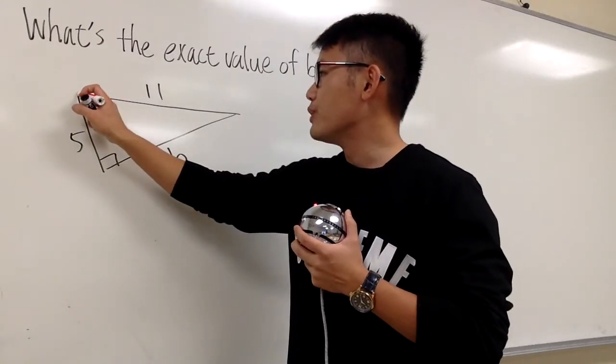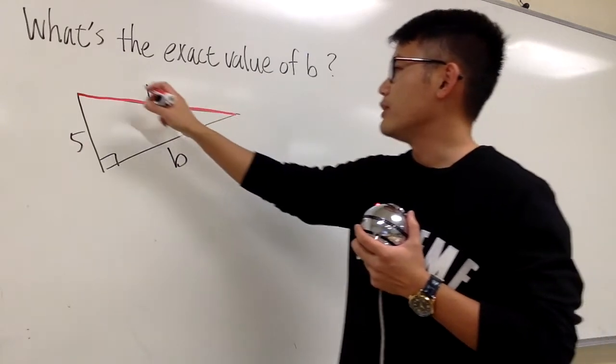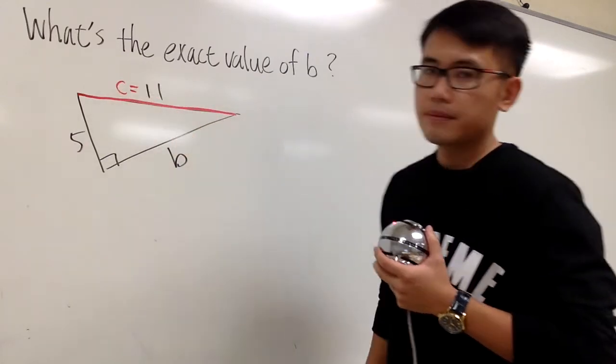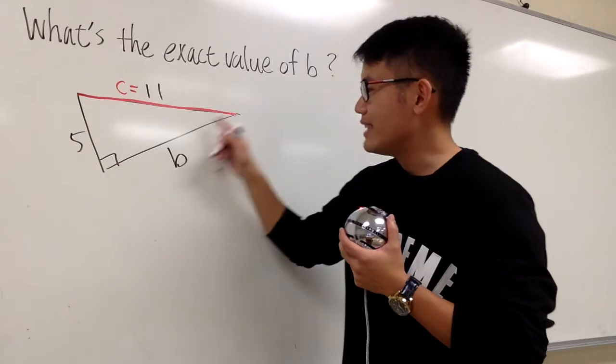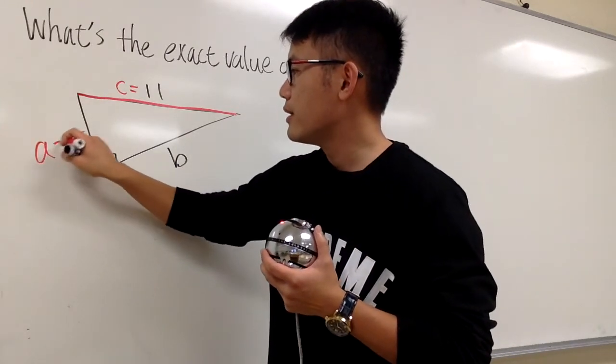So, the first thing you have to do is, I have to label the longest side, which is right here. I have to label this to be c, and then because this was labeled b already, I'm going to put the five as a.